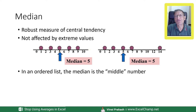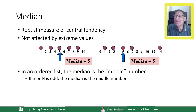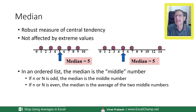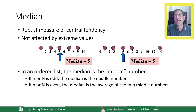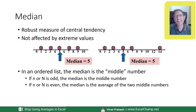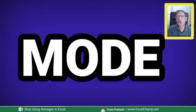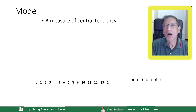If you have an odd number of data points, the median is simply the middle number. But what if you have an even set — for example, only four values? In that case, neither the second nor third value alone is the middle, so we take the average of the two middle numbers. That's how easy it is to calculate the median.